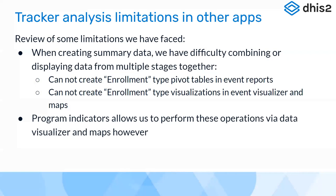What can we do with event reports, and what additional features are available with program indicator analysis using tracker data? What we cannot do with event reports, visualizer, and maps is create enrollment type pivot tables or enrollment type visualizations in event visualizer and maps. But with program indicators, we are able to perform these operations in the data visualizer app and in maps.